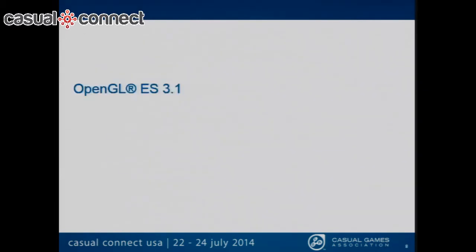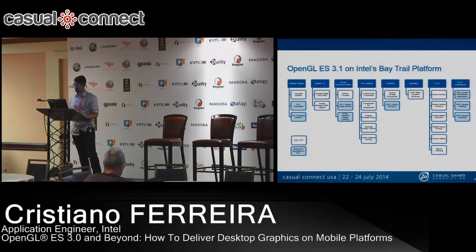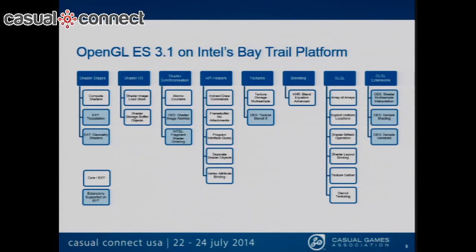Next we're going to go into OpenGL ES 3.1. It's a very important upgrade for Khronos because a lot of independent hardware vendors have compute units in their GPUs that they use on their new mobile platforms. This API takes advantage of all that new hardware — tessellation shaders, for instance, weren't previously available in hardware, but now they can be. Here are all the new features that came out with 3.1. The highlighted ones are the extensions supported by the Intel Bay Trail platform, which is our new high-end tablet. We pretty much have every extension covered aside from one.